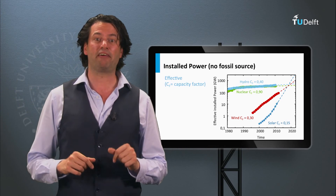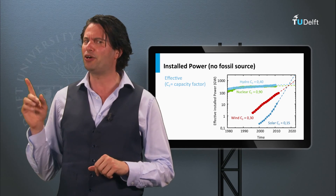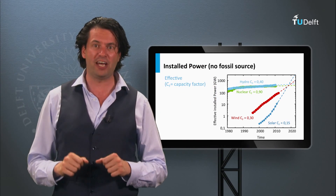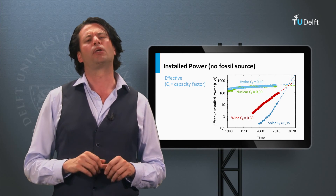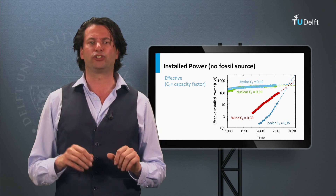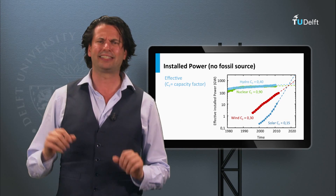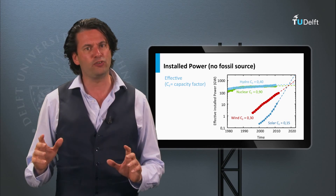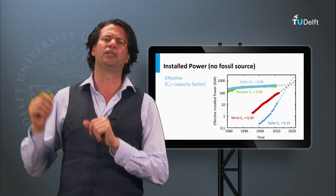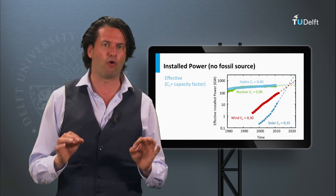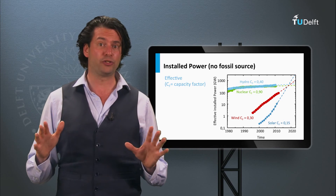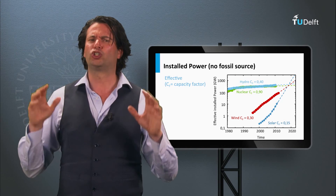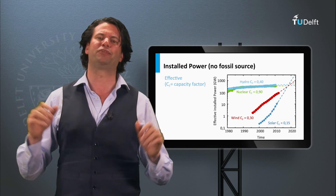Why can solar guarantee a much faster capacity growth than other technologies? First, solar energy is everywhere and available in great abundance — the total amount of solar energy incident on our planet is 10,000 times larger than our total energy consumption. Hydroelectricity is a secondary form of solar energy through evaporation of water, and wind is a secondary form of solar energy through solar-induced temperature differences. Consequently, solar energy is the biggest renewable energy source around.